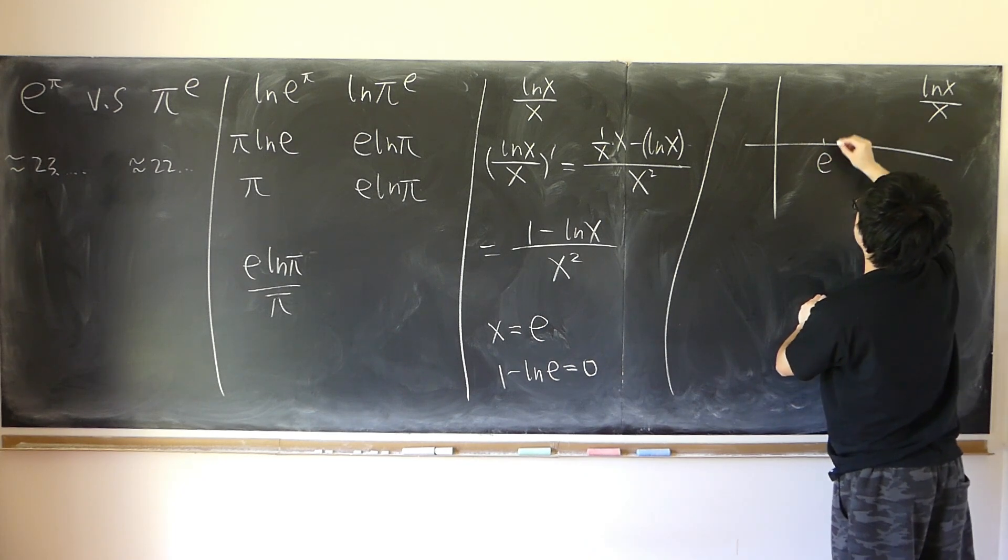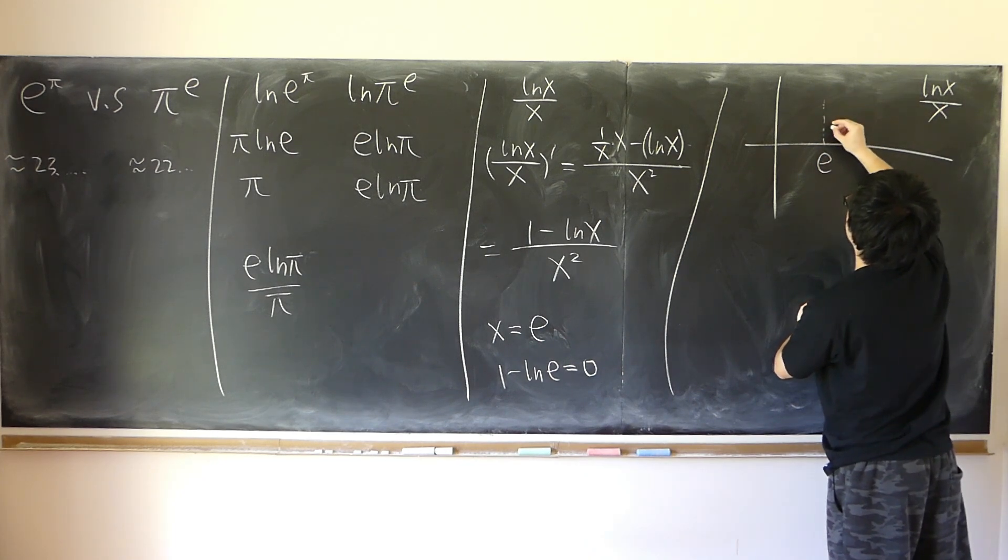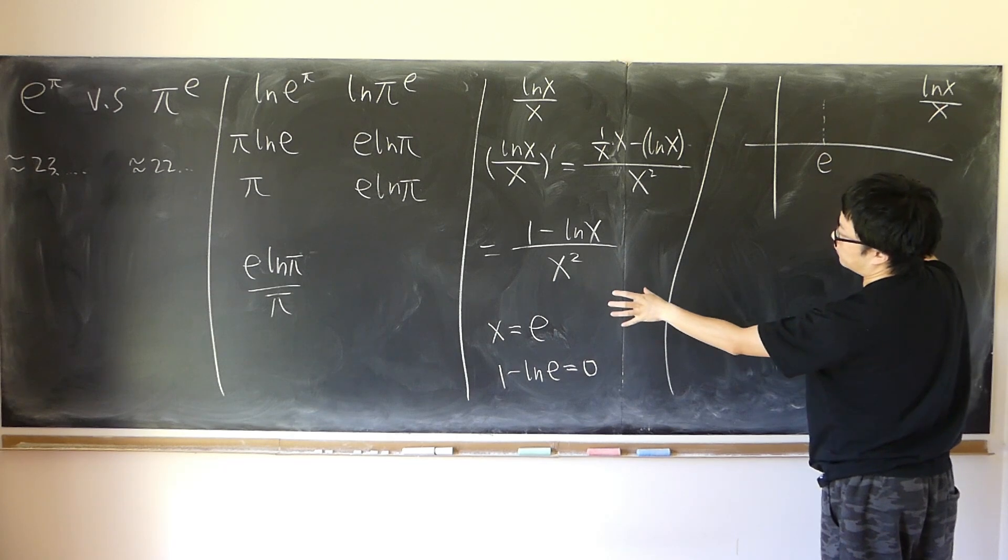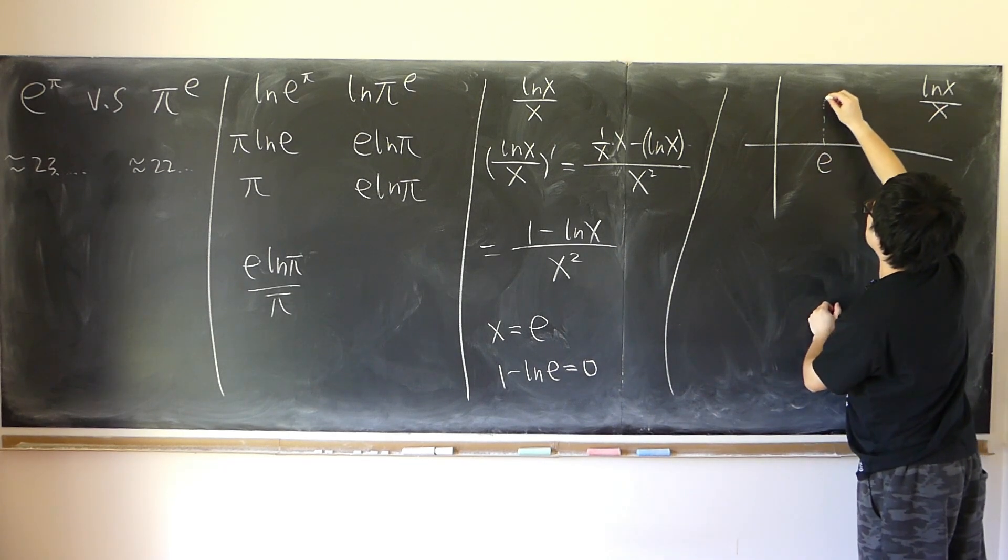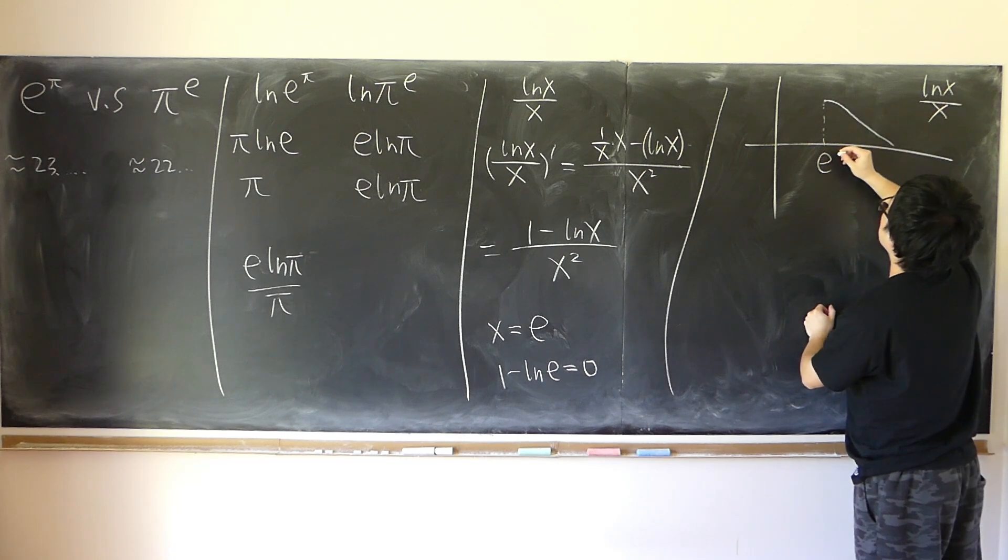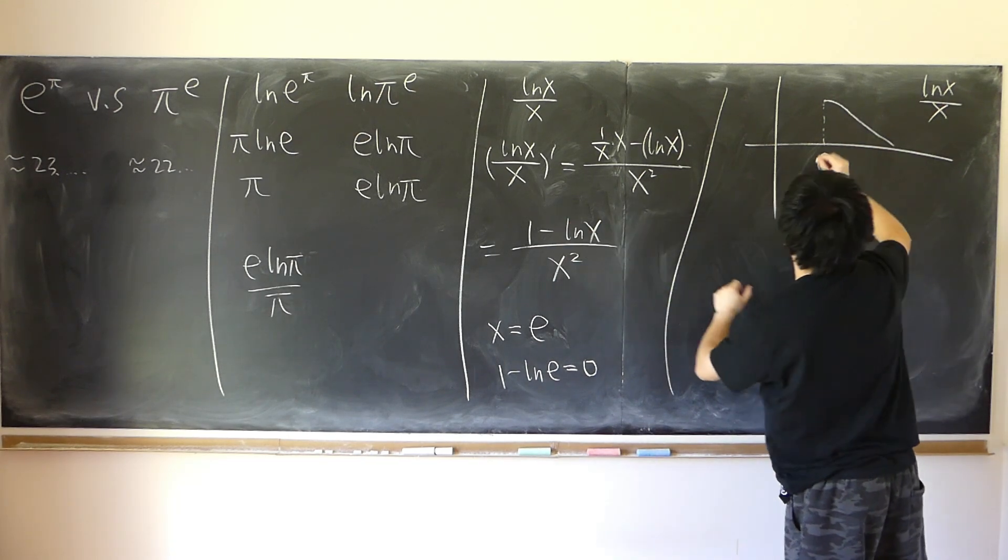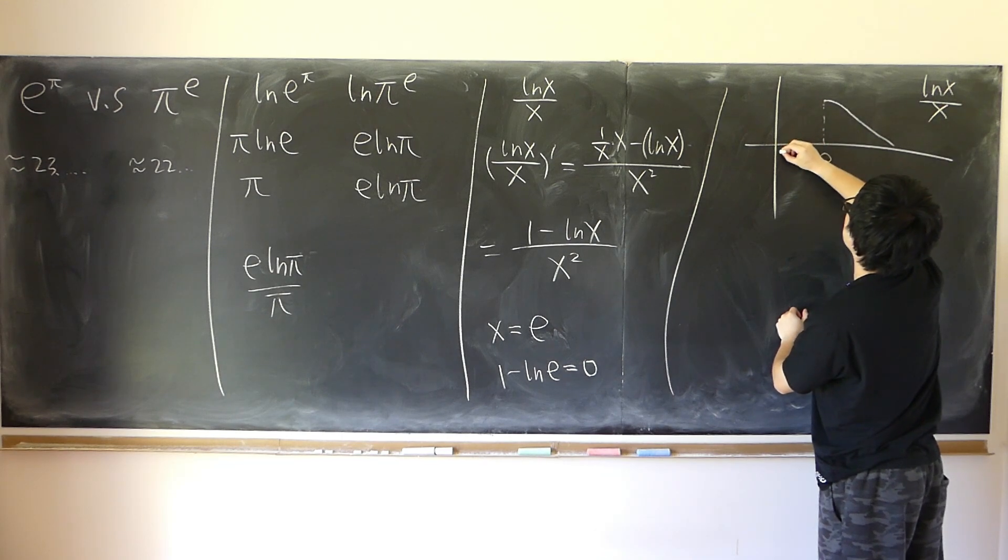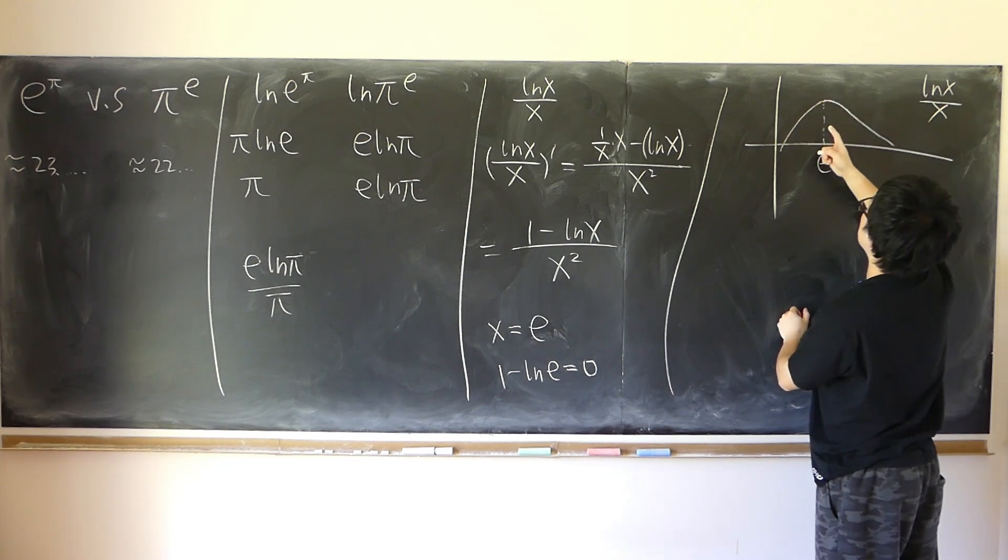So here is e, right. When x is bigger than e, derivative is negative, so meaning the function is decreasing. And so when x is less than e, it's positive, so function is increasing on the left-hand side of e.